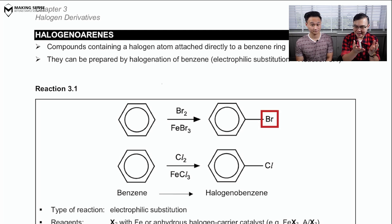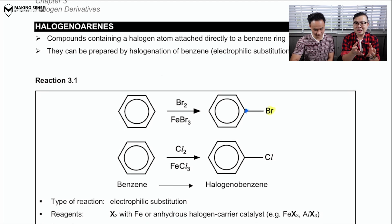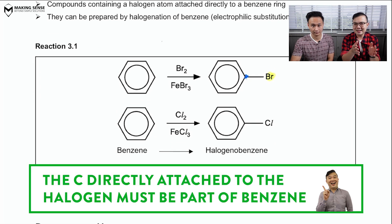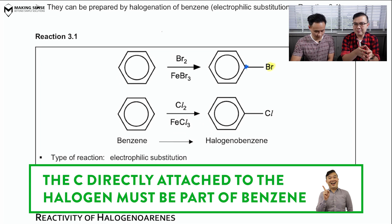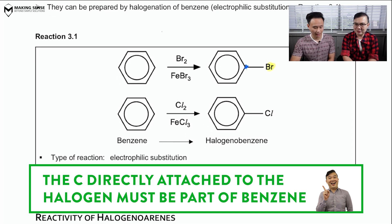So, once again, like the name suggests, halogen are bonded to an arene, which typically we talk about it as a benzene ring. So, once again, the halogen must be directly attached to the benzene. There should not be any additional carbon in between them because that will not be known as a halogenyl arene.